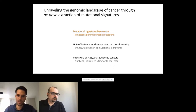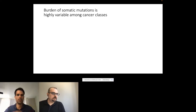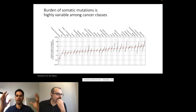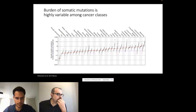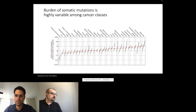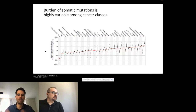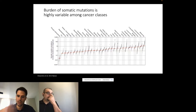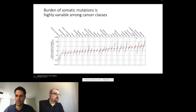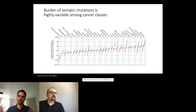Starting with the mutational signatures framework: this started because we knew that the burden — the number of somatic mutations — is highly variable among different cancer classes. This is data from TCGA from almost 10 years ago, mainly based on exome data. On the x-axis we have different cancer types; on the y-axis the number of mutations. There are great differences in the total number of mutations by cancer type, and it's not by chance that melanoma and lung cancers accumulate the most mutations, as these were known to be related with potent mutagens such as UV light or tobacco smoking.